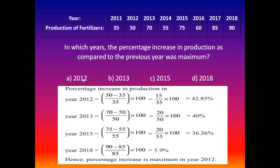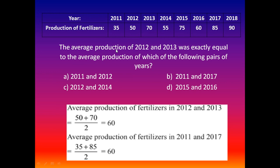The next question is: the average production of 2012 and 2013 was exactly equal to the average production of which of the following pairs of years? Options are: A) 2011 and 2012, B) 2011 and 2017, C) 2012 and 2014, D) 2015 and 2016. Average production of 2012 and 2013 equals (50 + 70) divided by 2, which equals 60.